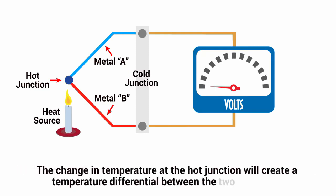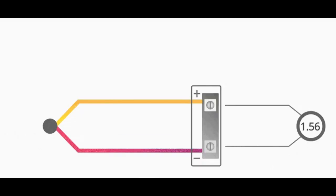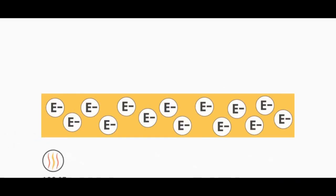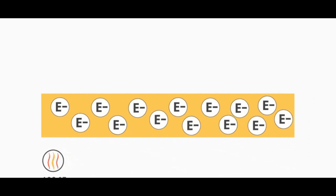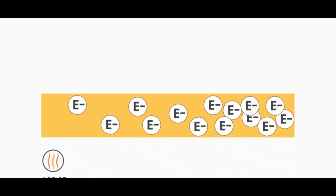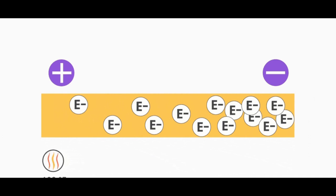It is called the Seebeck effect, which states when two dissimilar metals are joined together at two different temperatures, an electromotive force is generated across the junction of the metals.